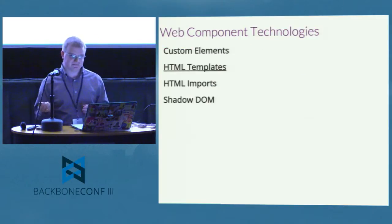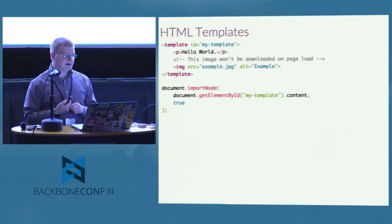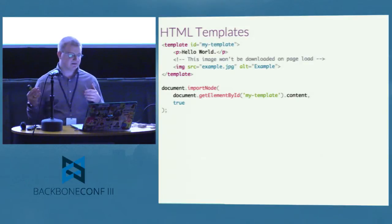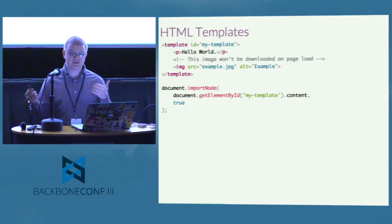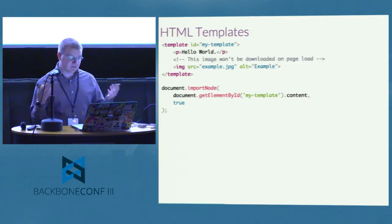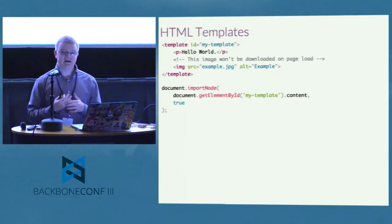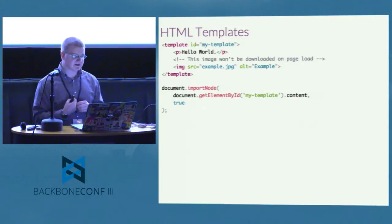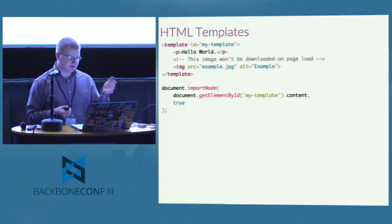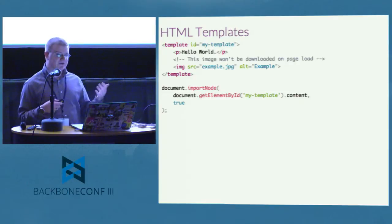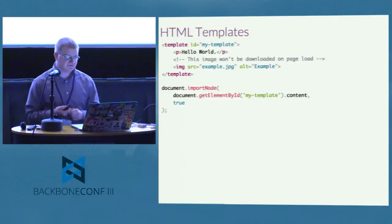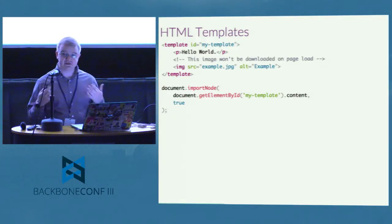The next technology is HTML templates — a new element in HTML called template that lets us put nodes on the page to be used later. Anything within a template tag is inert until we activate it by cloning it. This is different from Handlebars, Mustache, or Underscore templates — it won't have data binding or logic. It's bare-bones DOM elements. The image won't be downloaded because it's completely inert when added to the page. To activate it, I clone it with document.importNode, pass in the template's content property, and pass true for a deep clone.